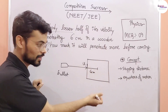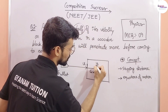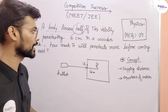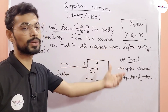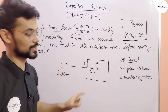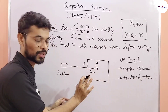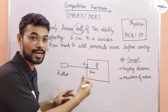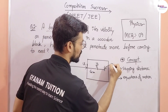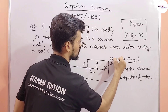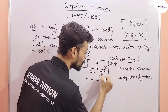After penetrating six centimeters, the final velocity is half of the initial velocity — so final velocity equals U divided by two. The question asks how much more it will penetrate before coming to rest, meaning the final velocity at that point equals zero.